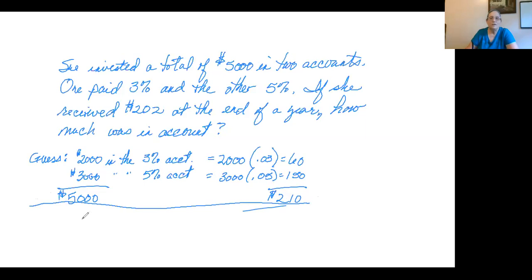So what if we said there's X in the 3% account? How much does that leave to go into the other account? The two amounts have to add up to $5,000. So we could say the amount in the second account is $5,000 minus X.